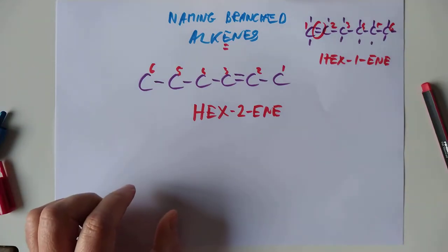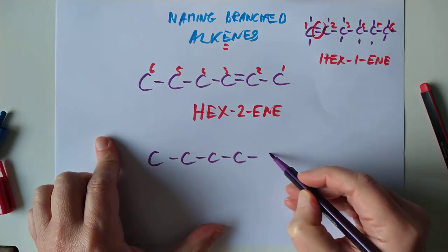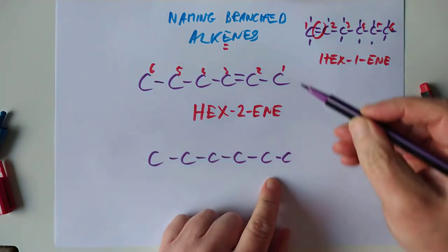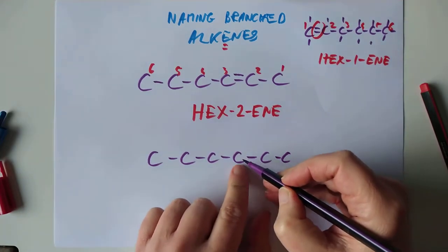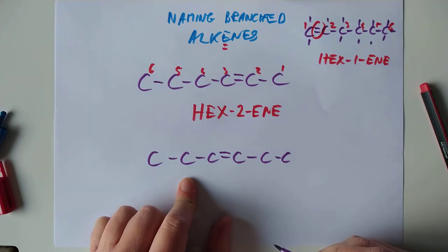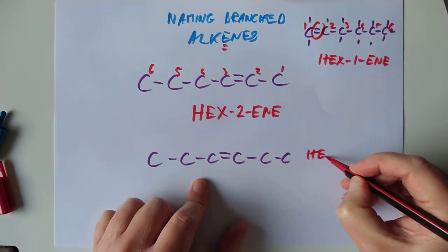Can you get hex-3-ene? Let's try and draw it then. If we keep the same carbon count here. 1, 2, 3, 4, 5, 6. So 1, 2, 3. That means the double bond would have to start here on that carbon. Can you get hex-3-ene? Yes, you can.